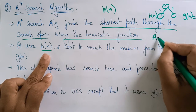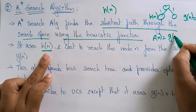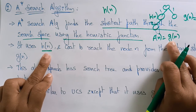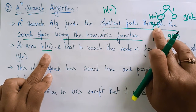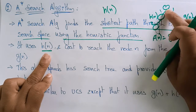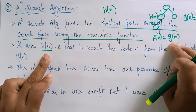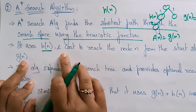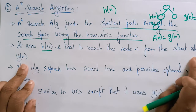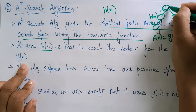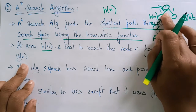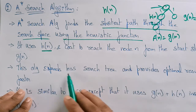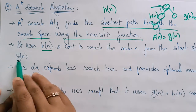To find the value f(n), you need the cost for that particular path — whatever cost is there to reach that node. For example, if you want to reach this node, the cost along that particular path is 2 plus 1, so that is g(n). The A star algorithm uses the heuristic value and the cost to reach node n from the start state; every time you calculate the cost from the start state.